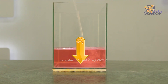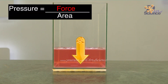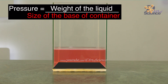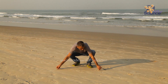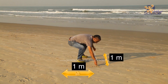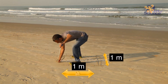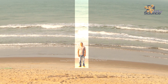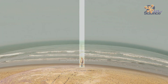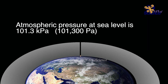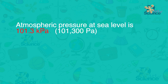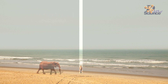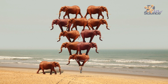Magnitude of atmospheric pressure. We saw that pressure in a liquid is force per unit area, where force is the weight of the liquid and the area is the base of the container. Similarly, atmospheric pressure is force per unit area. Consider the area to be one square meter on earth, and the weight of the air is the entire column of air all the way to the top of the atmosphere. Atmospheric pressure at sea level is 101.3 kilopascals — the same pressure as 10 large elephants standing on each other on one square meter.